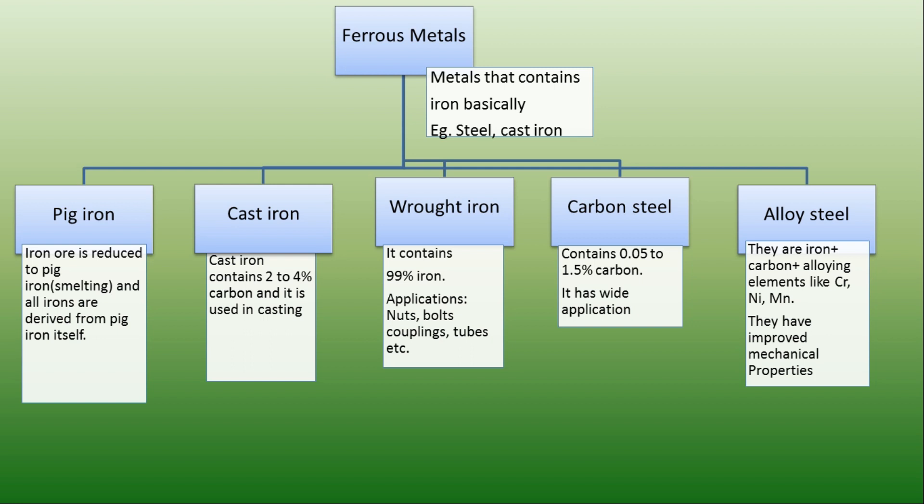High carbon steel is used in machine tools, hammers, making of dies, blades, and drills. They are also sometimes known as tool steel.